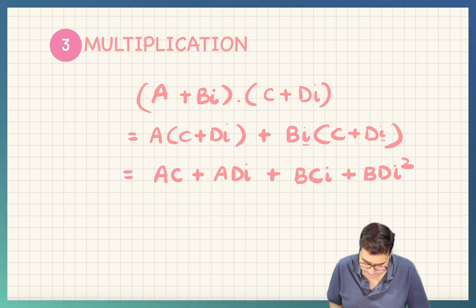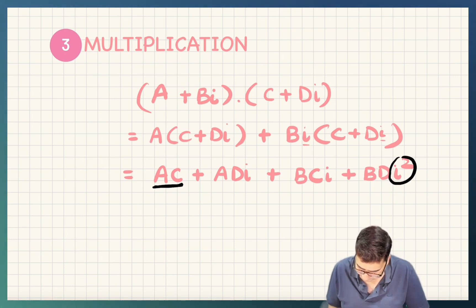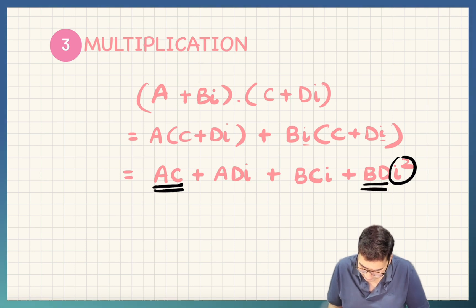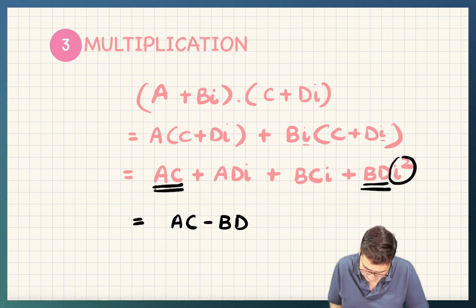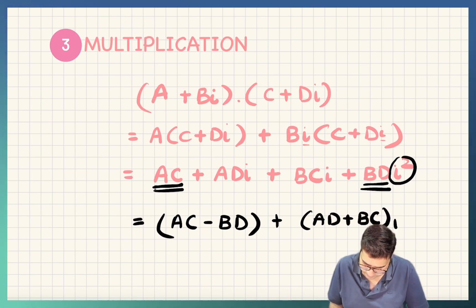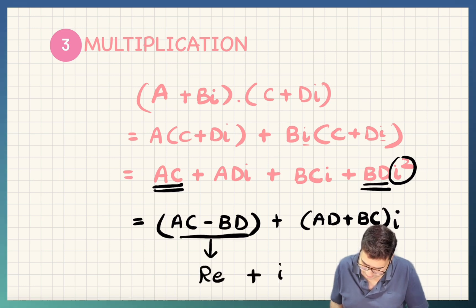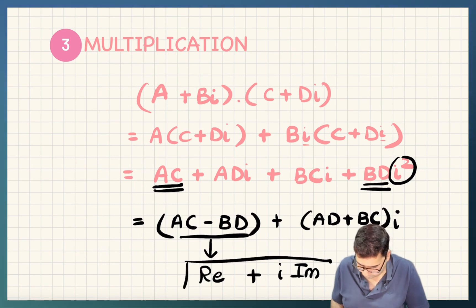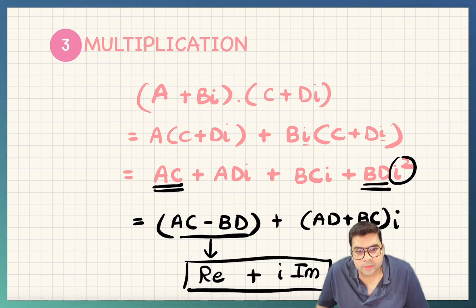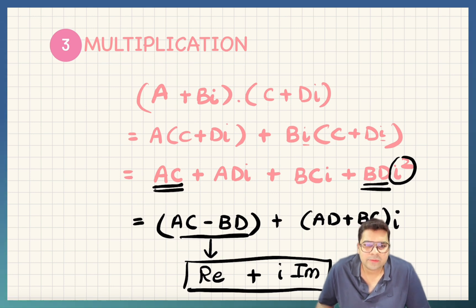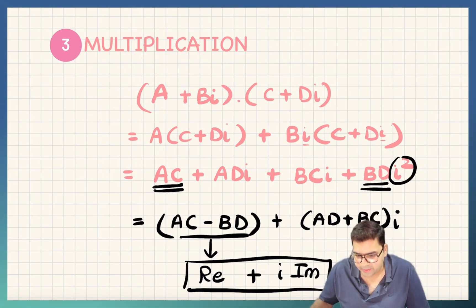In the next step, i squared is minus 1, so these two become real parts and you can combine them to get (ac minus bd) plus (ad plus bc)i. So again, this is converted into real part plus i times imaginary part, which is the standard form of complex numbers. Basically, multiplication is quite easy — all you need to do is expand, open the brackets, multiply, write i squared as minus 1, combine the real parts, combine the imaginary parts.